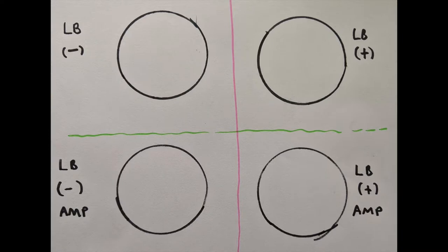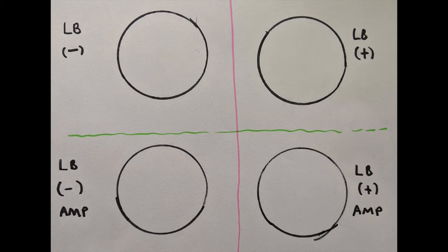Prediction time. We have LB minus, LB minus AMP, LB plus, and LB plus AMP. What do you expect to find on each of the four dishes? Pause the video right now, write down your predictions. Think about the four conditions and write down what you expect.